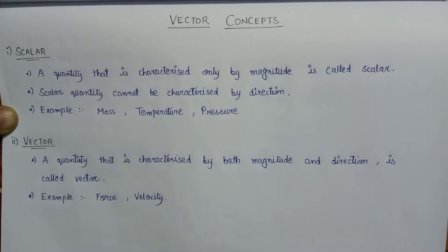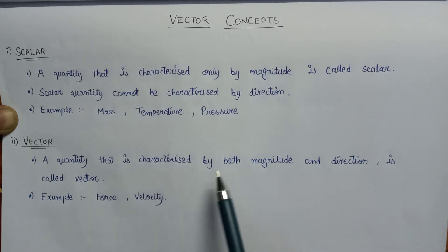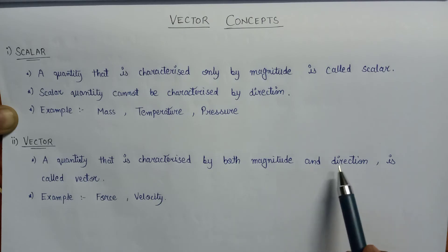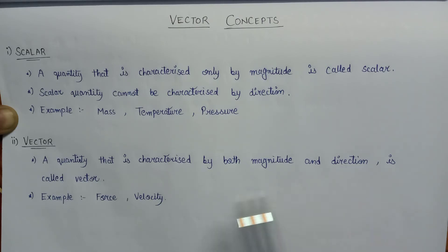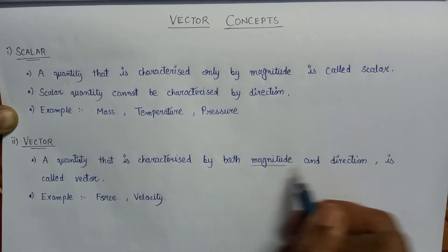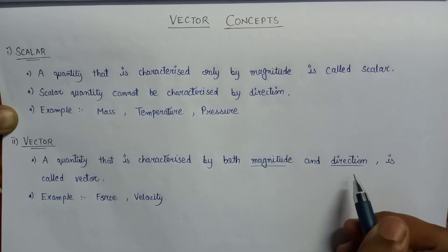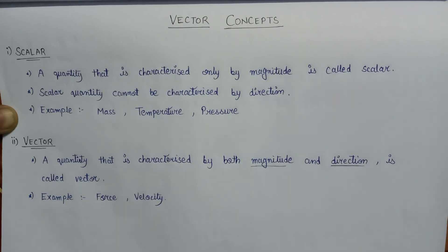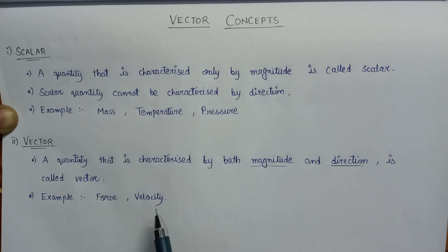A quantity that is characterized by both magnitude and direction is known as a vector quantity. The vector quantity requires both magnitude as well as direction for its complete specification. Examples of vector quantity include force and velocity.